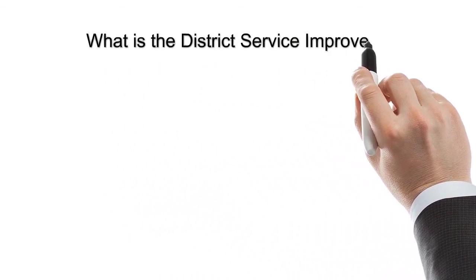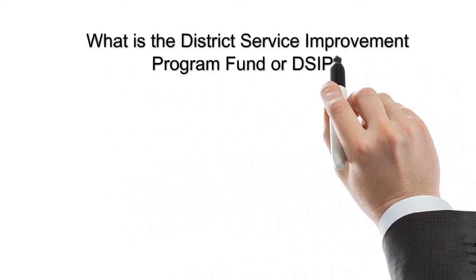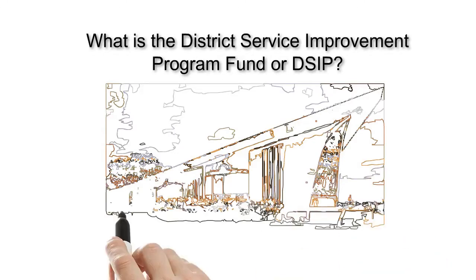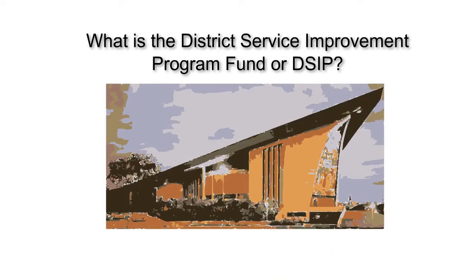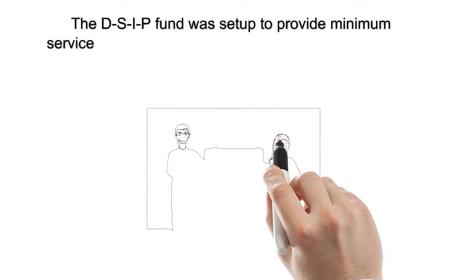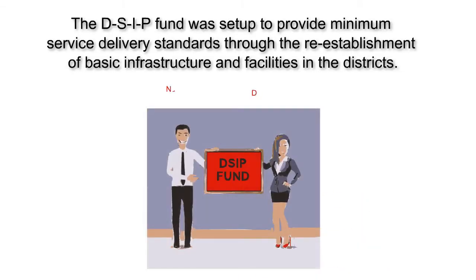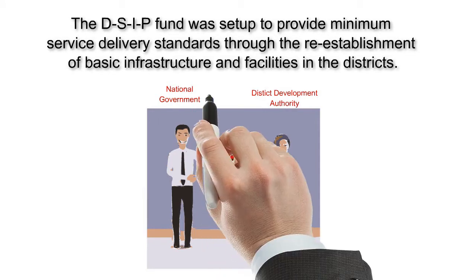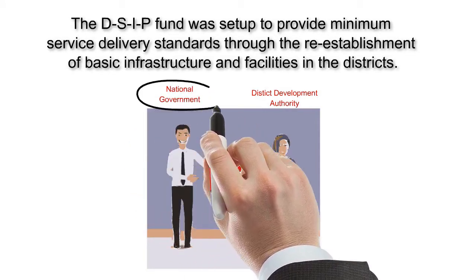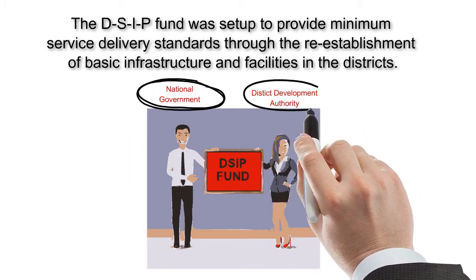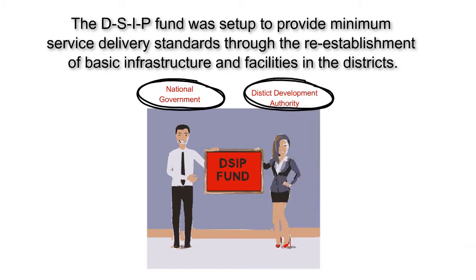What is the District Services Improvement Program fund, or DSIP, and what are the laws and guidelines that govern how the DSIP is spent? The DSIP fund was set up to provide minimum service delivery standards through the re-establishment of basic infrastructure and facilities in the districts. The DSIP is allocated to the District Development Authority to be managed under